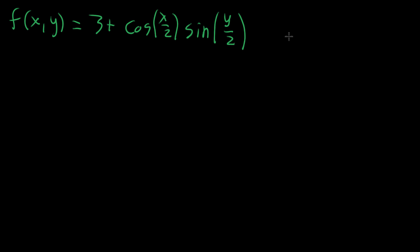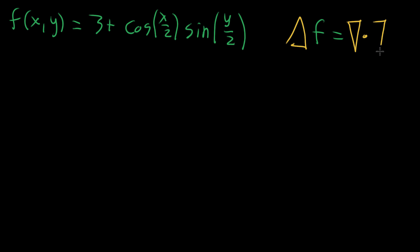The Laplacian, which we define with this right-side-up triangle, is an operator of f. It's defined to be the divergence — nabla dot — times the gradient, which is just nabla, of f. So two different things going on; it's kind of like a second derivative.